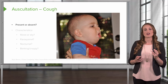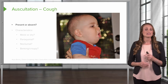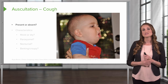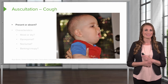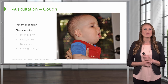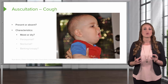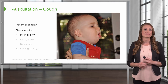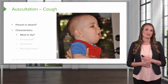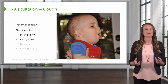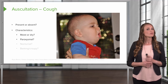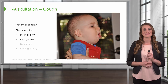Next, you're going to listen for a cough. Is it present or absent? You can also ask the parents about this if the patient isn't currently coughing in the clinic. You want to ask about characteristics — is this a wet cough or a dry cough? Certain conditions are associated with each. Is it paroxysmal? Does the patient get coughing spasms? We worry about this in the setting of pertussis.